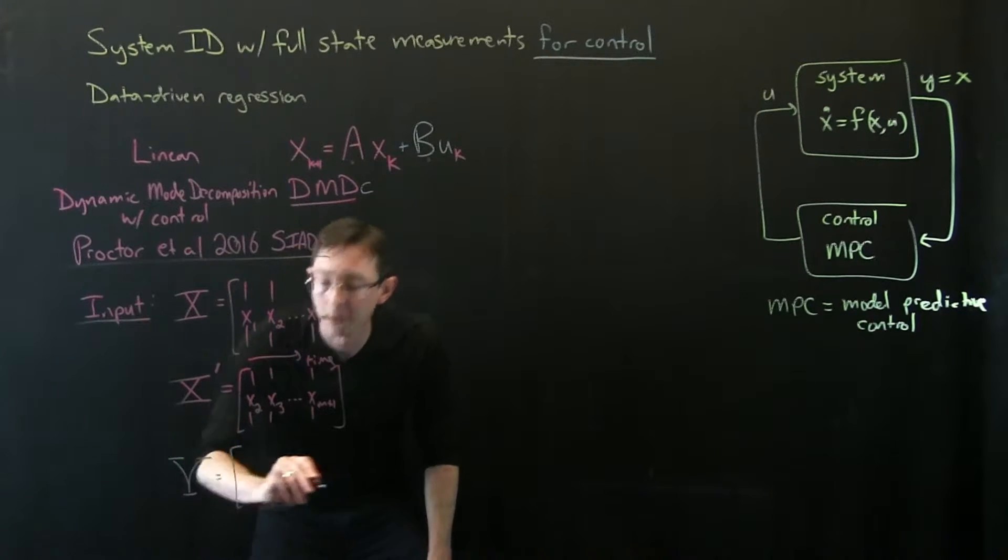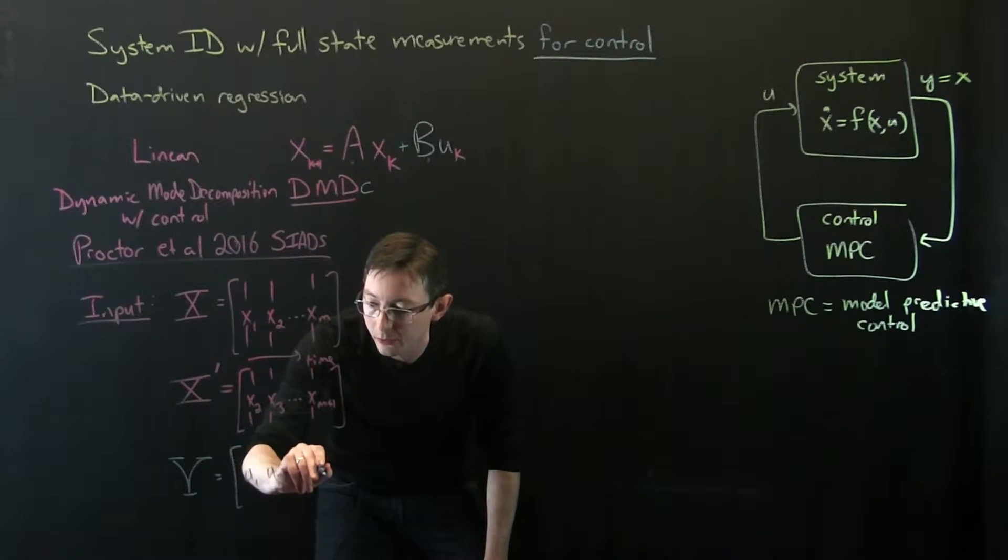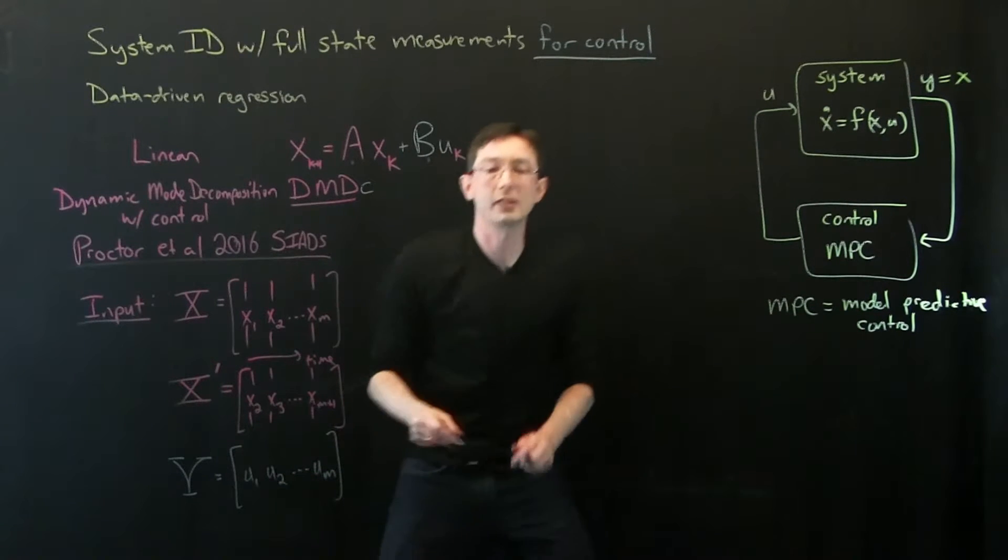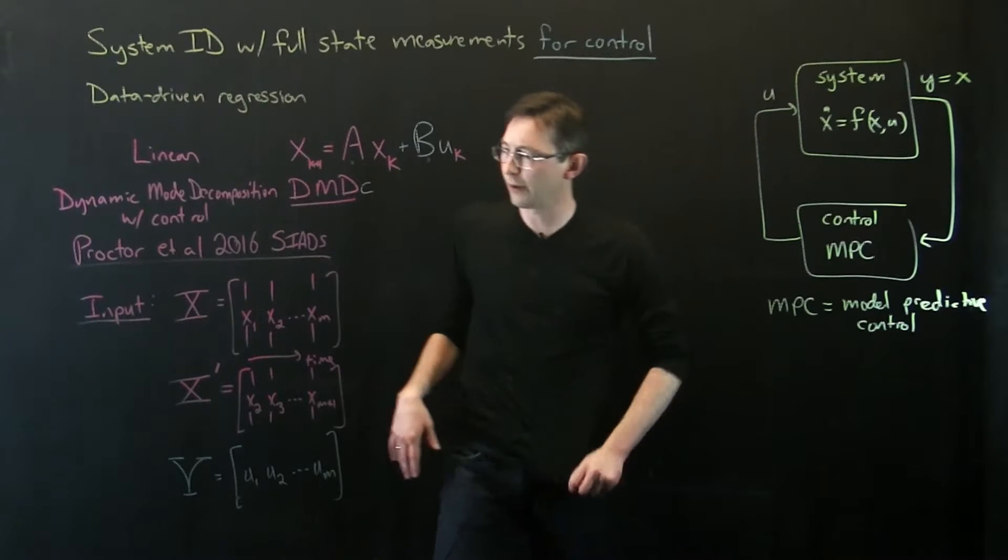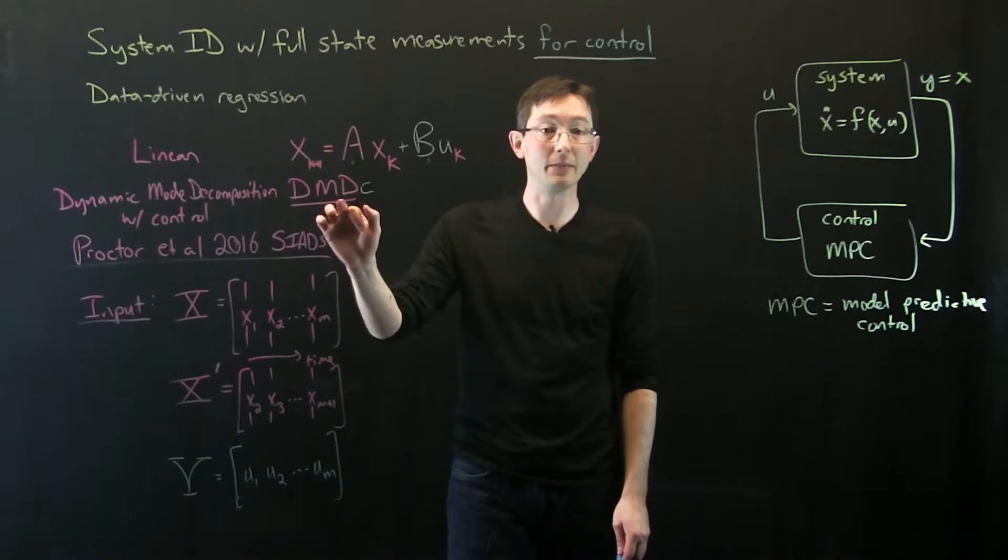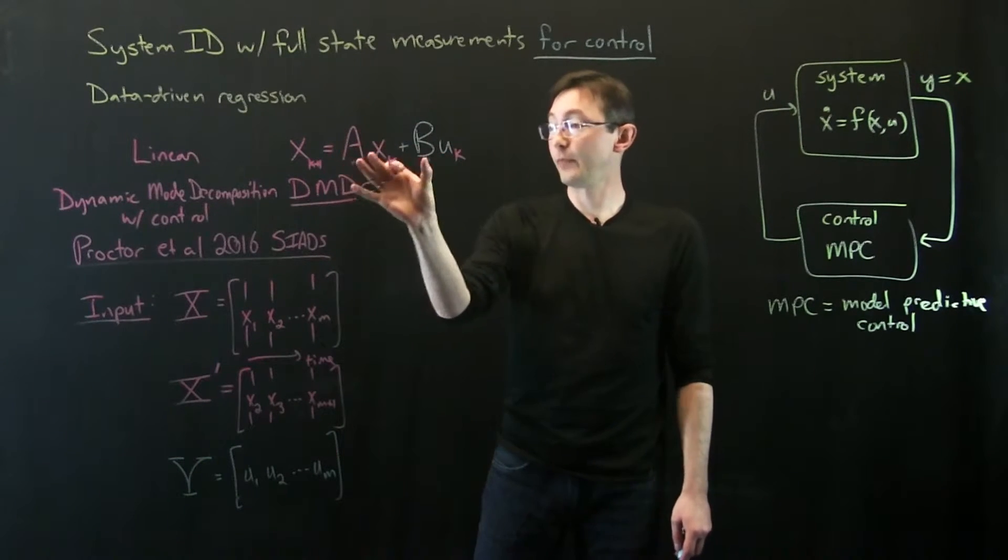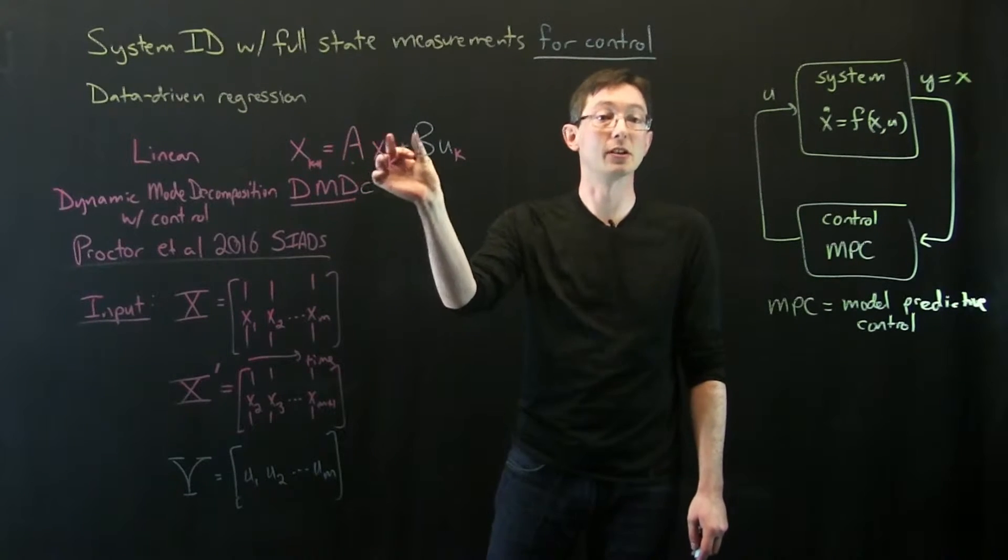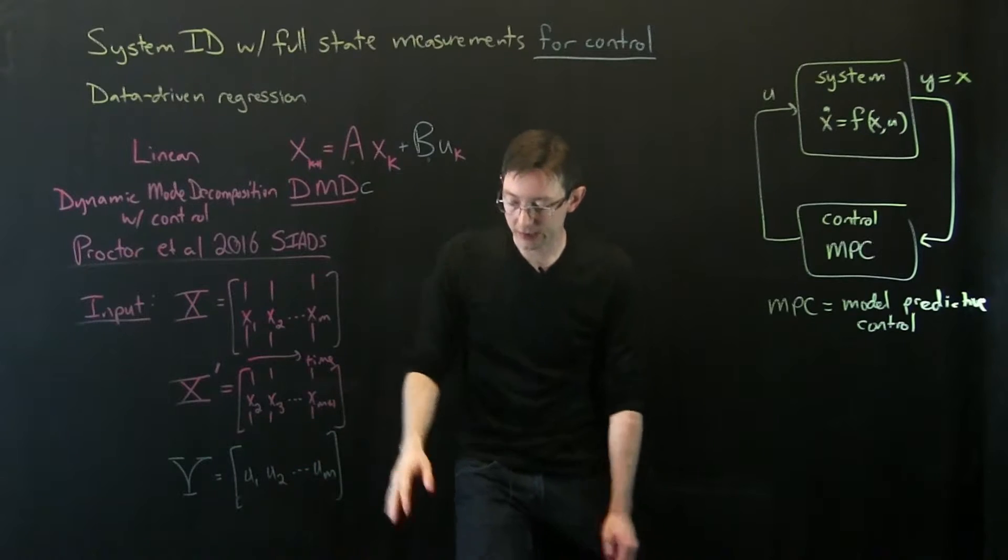Let's see if I can actually get my upsilon to look okay. This is u1, u2, dot dot dot, u m. So that's also a matrix of my input measurements. So x and x prime are the original inputs for DMD. Now I have this upsilon, which will help me interpret and disambiguate the effect of actuation and the natural dynamics. So this is the input to the method.